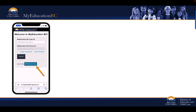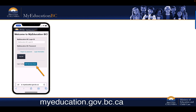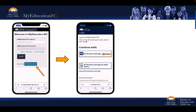To begin connecting your My Education BC student or parent login ID to your BC Services Card app on a mobile device, select the BC Services Card link on the My Education BC login page located at myeducation.gov.bc.ca. After selecting the BC Services Card link, a request to access the BC Services Card app installed on the mobile device may appear. Select Open to continue.